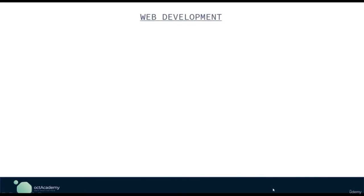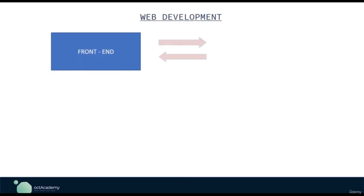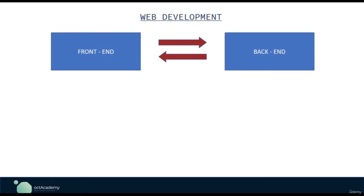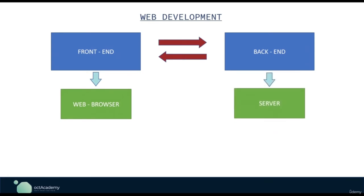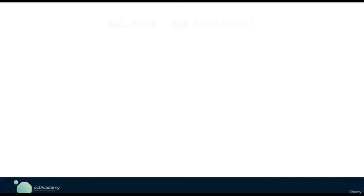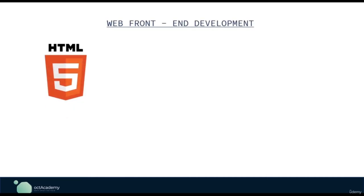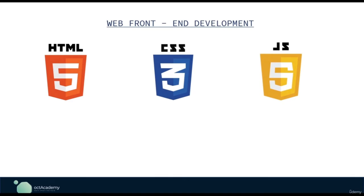In web application development, we have to look at two sides: frontend and the backend side. The frontend side will load on the client side inside the web browser, and the backend side loads inside the web server. The end user will only see the frontend, not the backend. To design the frontend, we use HTML, CSS, and JavaScript.